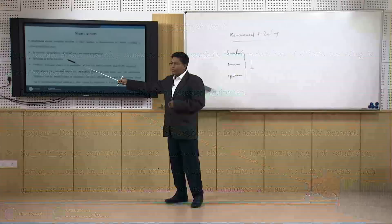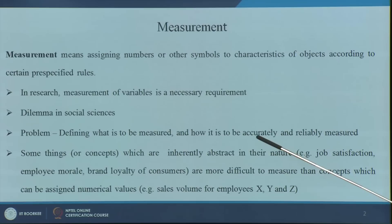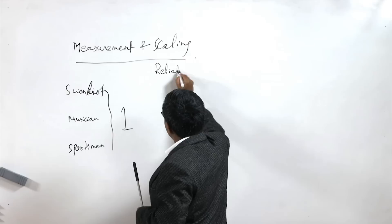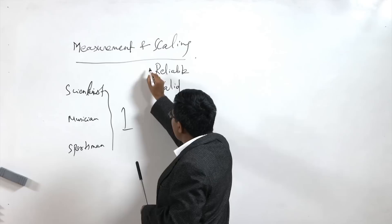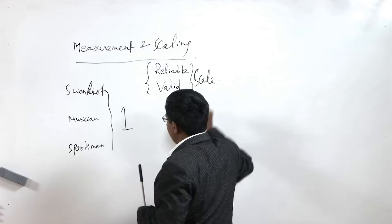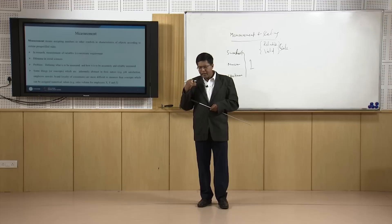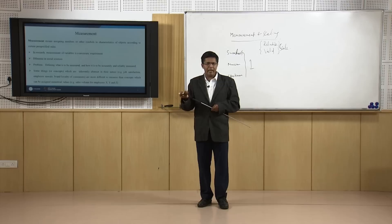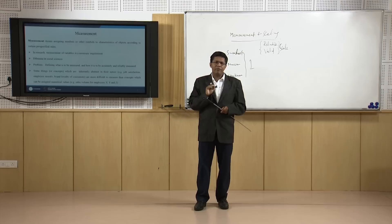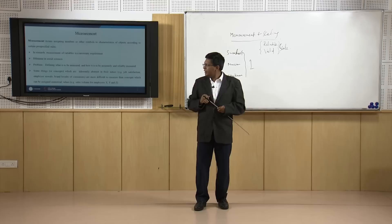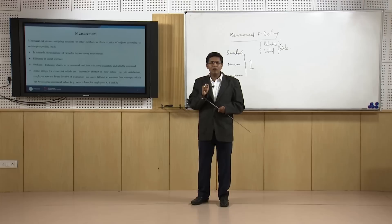So what is to be measured? How is it to be measured accurately and reliably? New words are coming — like reliable — and another term that will come is valid. These two terms are associated with any scale. A scale has to be reliable, meaning it repeatedly gives you the same result again and again with very little variation. Valid means it has to be the right way of collecting the result or data — for example, stamina could be a valid indicator for measuring a sports person.